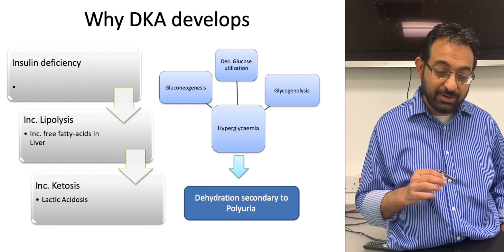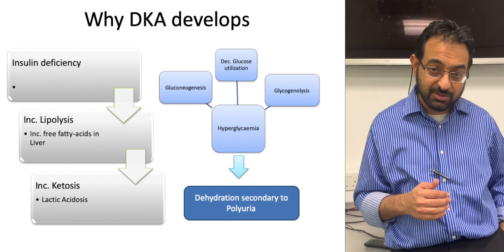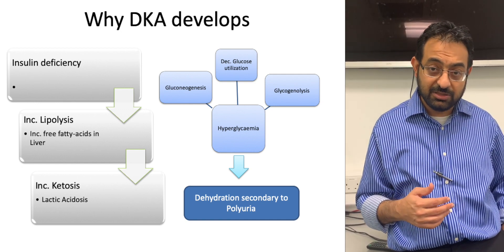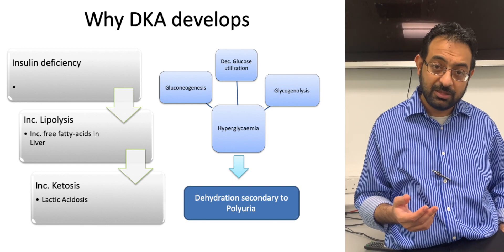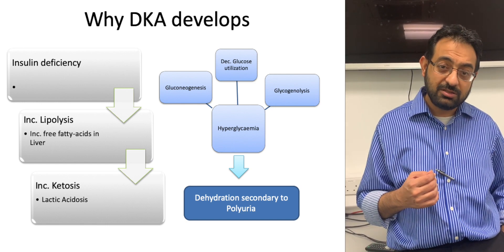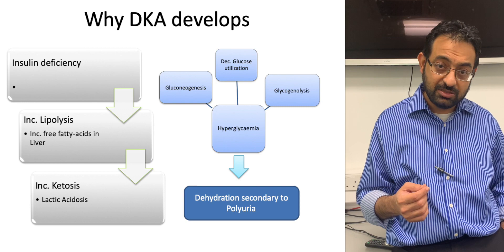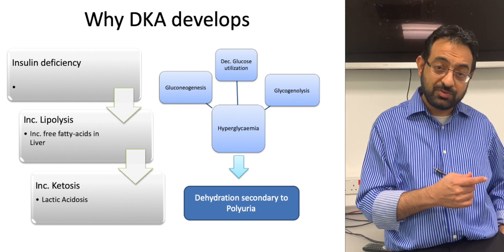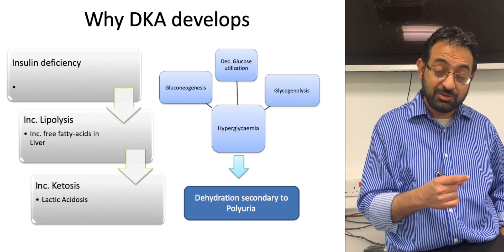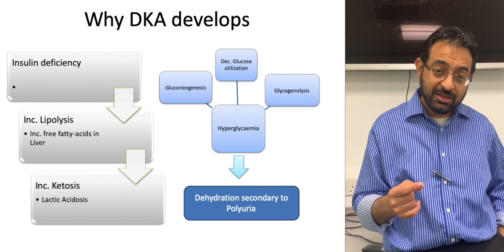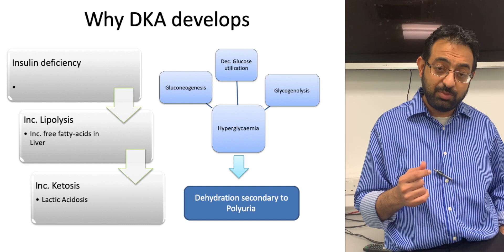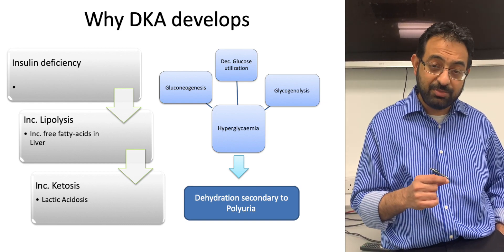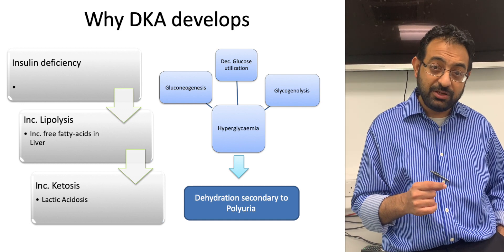The other thing which the hyperglycemia does — because this glucose is not being utilized — is that it ends up causing diuresis, which leads to dehydration. So when you start giving somebody treatments for DKA, the actual problem was the insulin deficiency. So you give them insulin to correct that, and then you start dealing with the problems initially generated by the hyperglycemia, which is the fluid depletion.